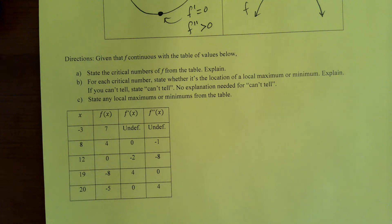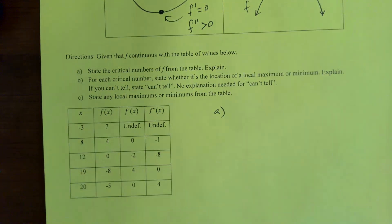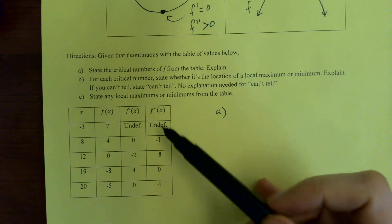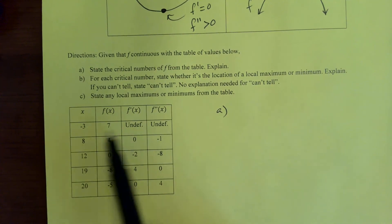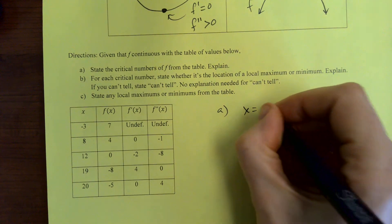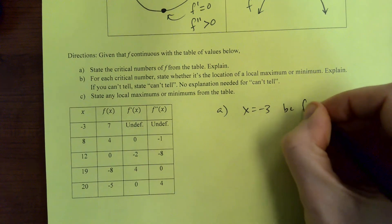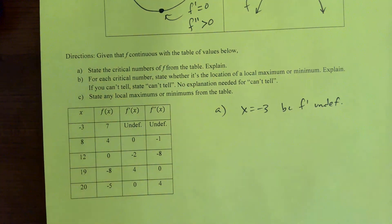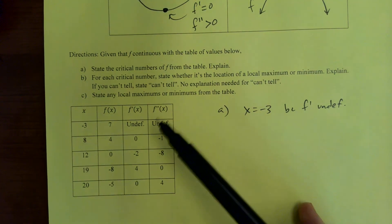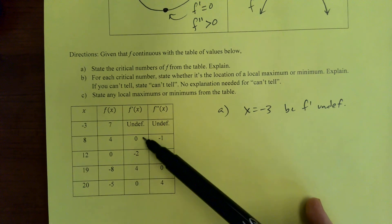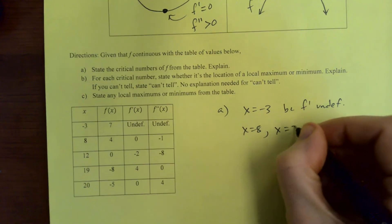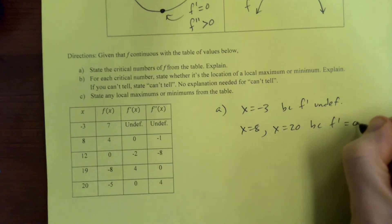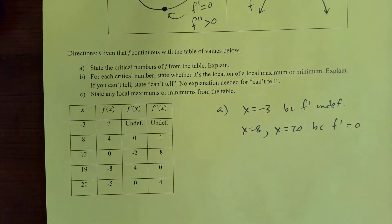Critical numbers are where F prime is zero or undefined. So where is F prime undefined or zero? It's undefined at X equals negative 3 because F prime is undefined. And then F prime is zero at X equals 8 and X equals 20 because F prime is zero. So those are the critical numbers.